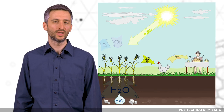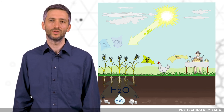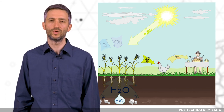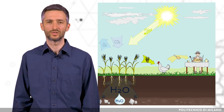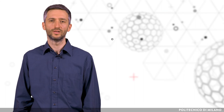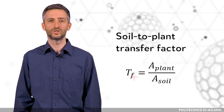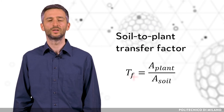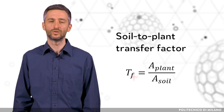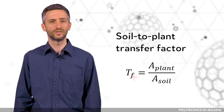Once radionuclides enter an agricultural area, they can be taken up by crops, which can then be transferred to humans by direct ingestion of the crops or via intermediate animals through meat or dairy products. Different crops take up different proportions of radionuclides from soil, and this is characterized by soil-to-plant transfer factors, where the activity concentration of radionuclides in plants is divided by the activity concentration in soil. This is also dependent on soil types and the chemical forms in which the radionuclides are present.